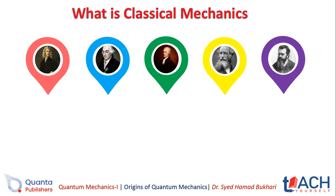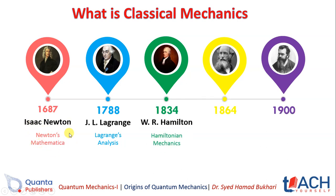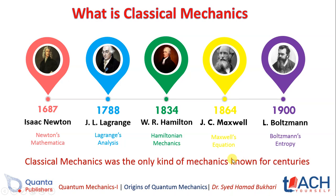Classical mechanics has been around for a long time. Some of the most important names in its history: it started in 1687 when Isaac Newton published his work Principia Mathematica, then in 1788 Lagrange's analytical mechanics, then Hamilton introduced his mechanics in 1834, then in 1864 Maxwell introduced the famous Maxwell's equations, and finally in 1900 the Boltzmann entropy formula was also provided on the basis of classical mechanics.